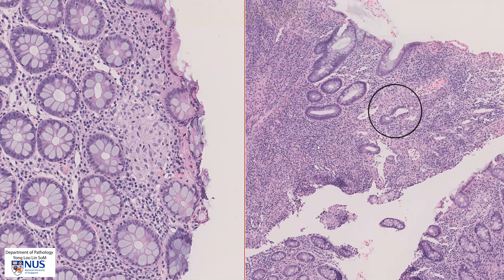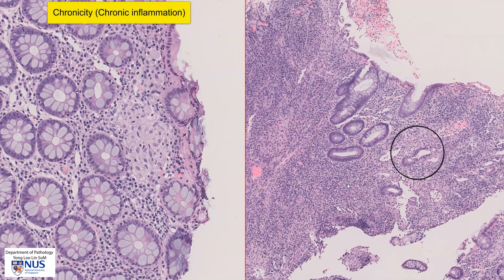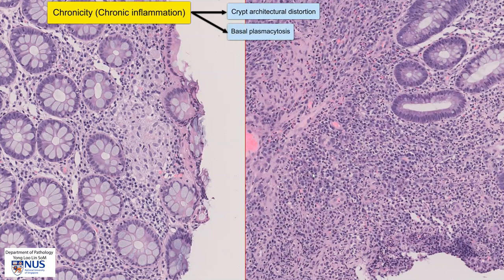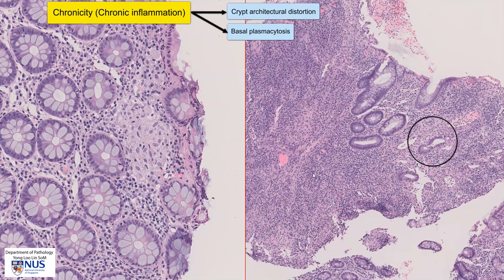So we have seen some features of activity, such as ulceration, cryptitis, as well as granulomatous inflammation. Let's look for some features of chronicity. In this particular example, we can see that there is shortening of the crypts, there is branching or some architectural distortion. And also over here we see a lot of plasma cells at the basal aspect of the mucosa, and this is known as basal plasmacytosis. These features are indicative of the presence of chronic inflammation or chronicity.